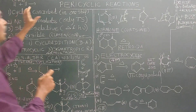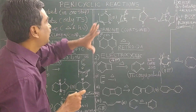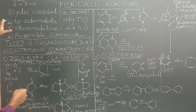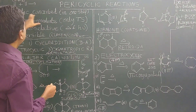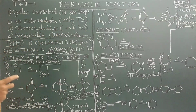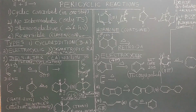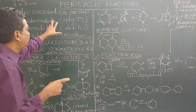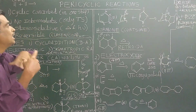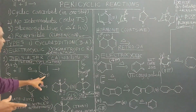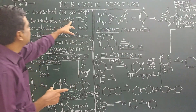Let us first study about pericyclic reactions. Pericyclic reactions are nothing but cyclic concerted reactions. A cyclic concerted reaction occurs in only a single step. There will be no intermediate formed — only a transition state, specifically a cyclic transition state, is formed.